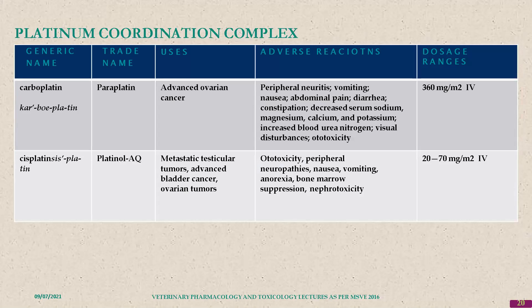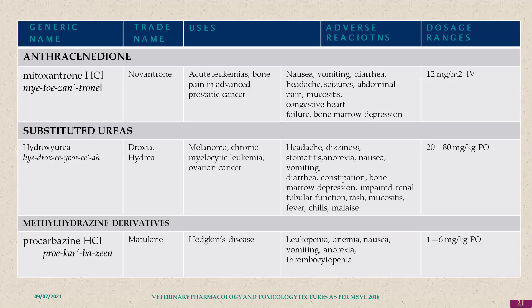Anthracenediones like mitoxantrone are used in acute leukemia. Substituted ureas like hydroxyurea are used in melanoma and other skin cancers. Procarbazine hydrochloride is used in Hodgkin's disease.